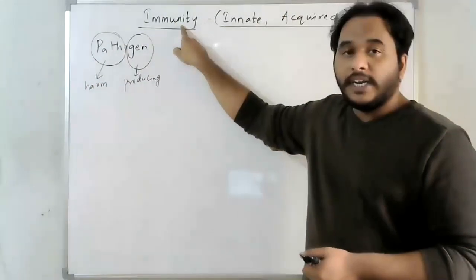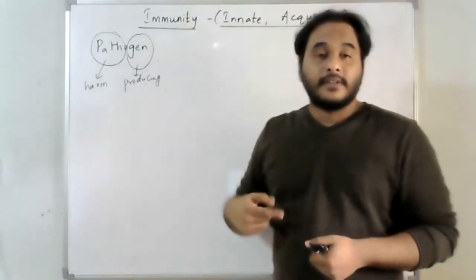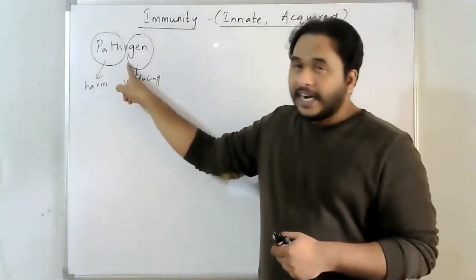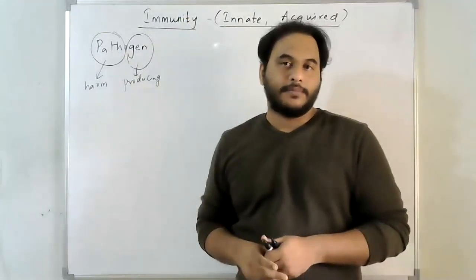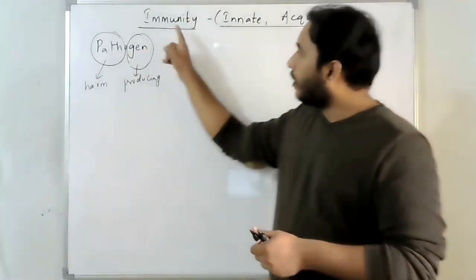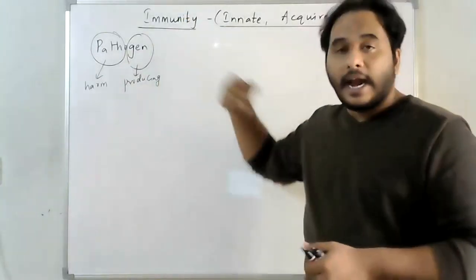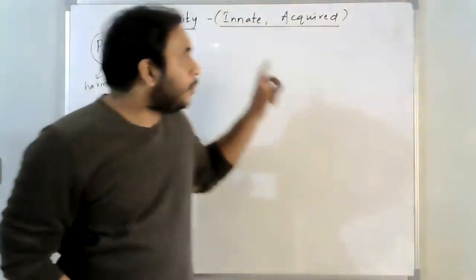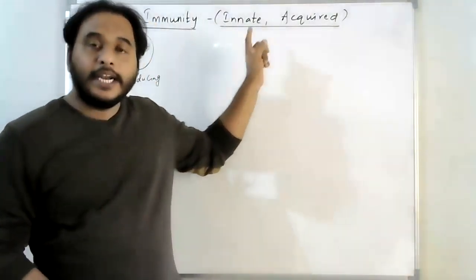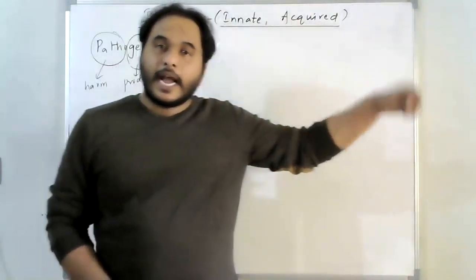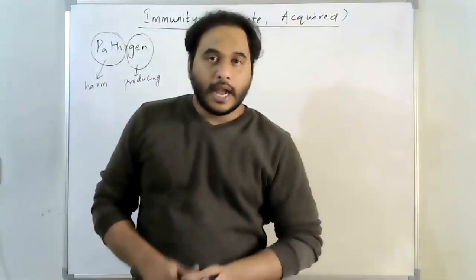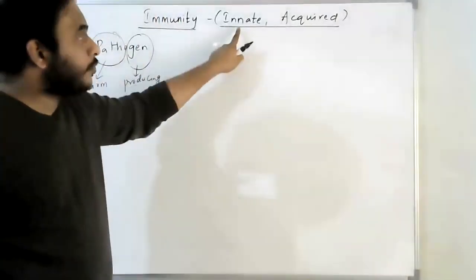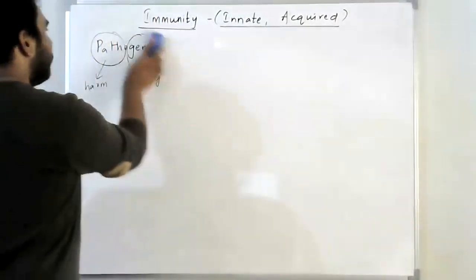Immunity is the ability of a body to fight against this pathogen, and this immunity is classified into two types. Number one, innate immunity, and number two, acquired immunity. In this class, we are going to study about innate immunity.